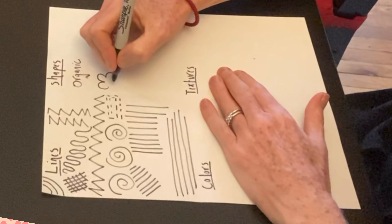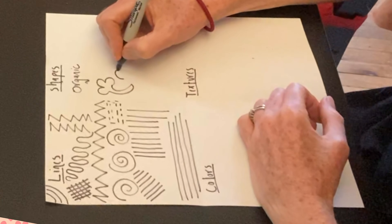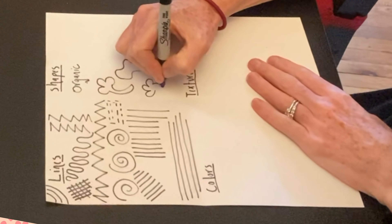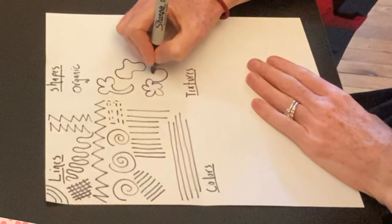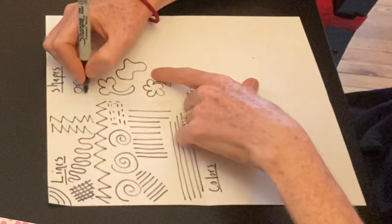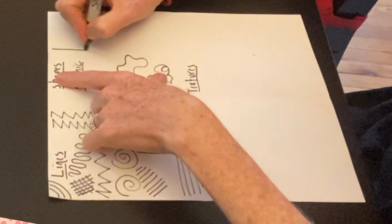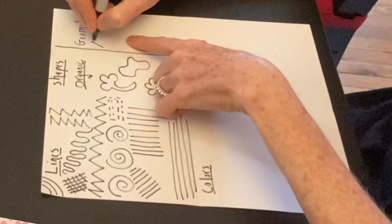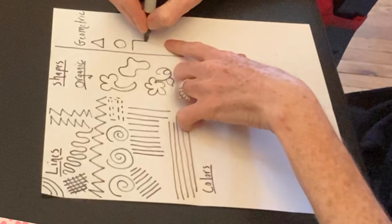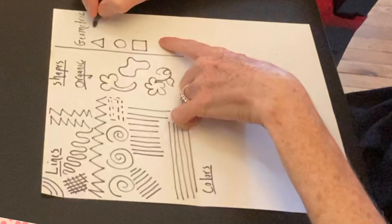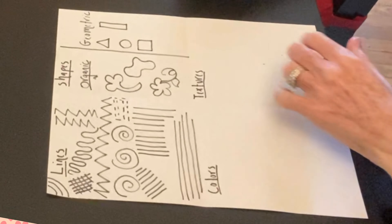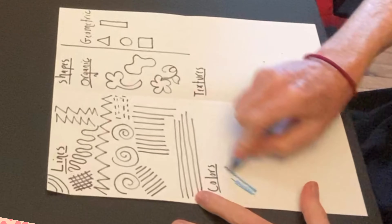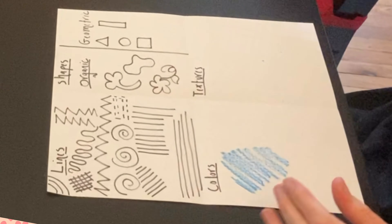Next I am thinking about organic shapes. Organic shapes are shapes that you find in nature. Geometric shapes are next, and those tend to be shapes that have uniform measurements — triangles, squares, rectangles, for example.